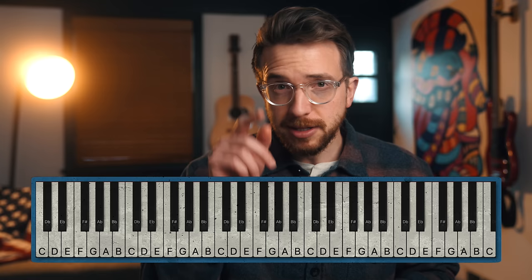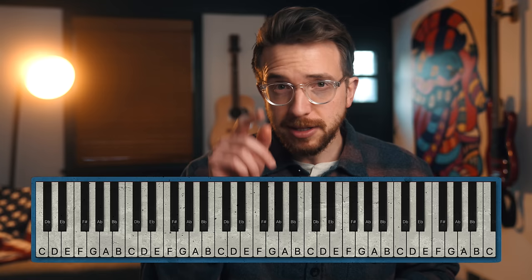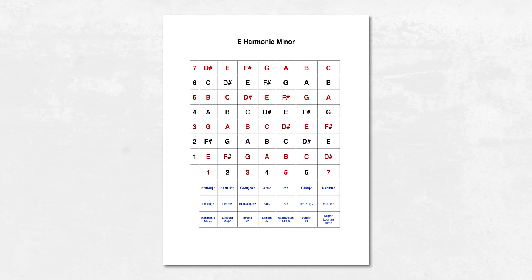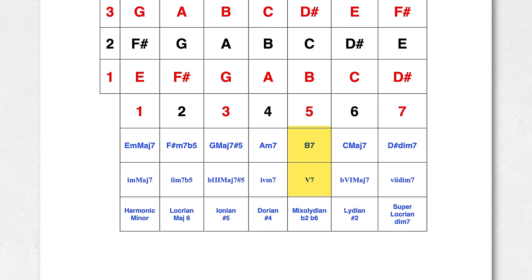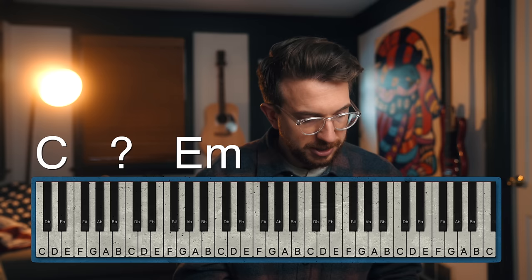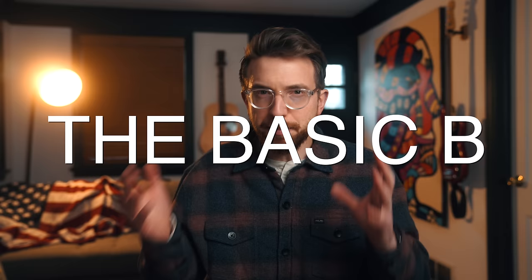Let's do another example. We're going to start on C major and land on E minor. How do we get to the E minor via a secondary dominant? We call it five of X — what is the five of E? Using the chord scale chart, we pull up the E minor chart. The five is a B, so we get: C major, B7, E minor. That is nice. This is the most basic version — I call it the Basic B of secondary dominance.